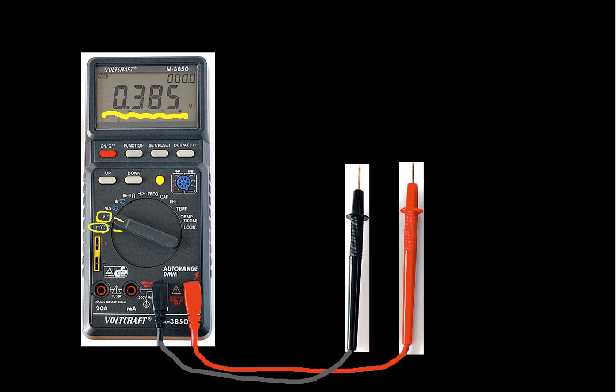This multimeter will also measure current if I point it to A, and if I want to measure current, then I need to take this lead and move it over to here. I can also measure milliamps, and again I'd have to take the red lead and move it over to here. Not all multimeters anymore require you to do this. Some of them will just have one.